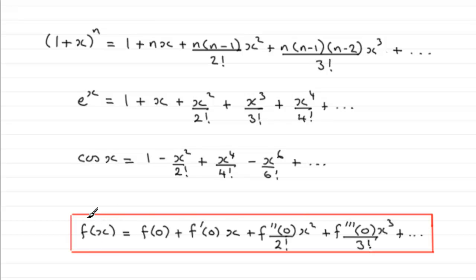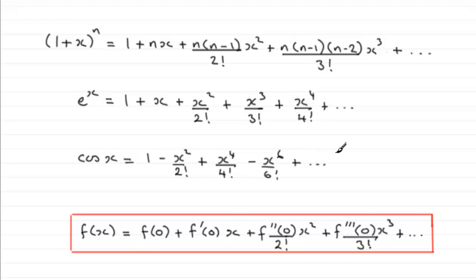The Maclaurin series formula states that if you have some function of x, it equals f(0), plus the first differential of f(x) with x substituted as 0, multiplied by x, plus the second differential of f(x) with x substituted as 0, times x² over 2 factorial, and so on. Using this formula we can develop these series, but what I want to do in this video is prove how we get this result, and then in other videos we'll see how to develop these particular series and others.